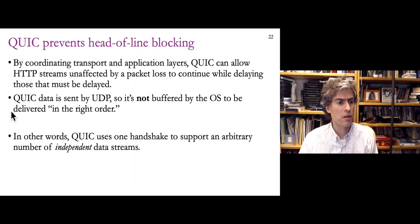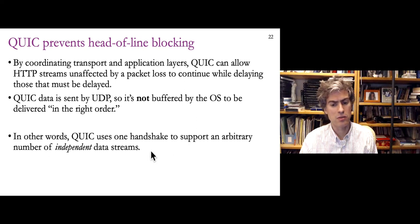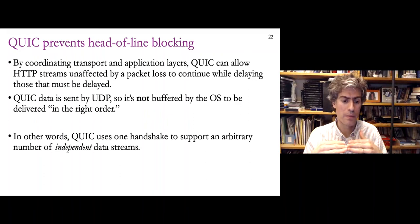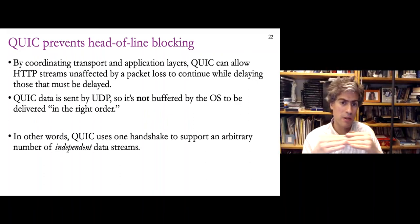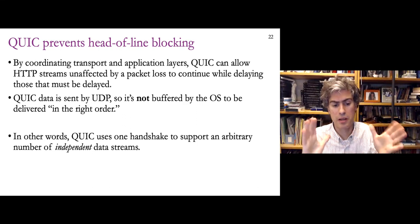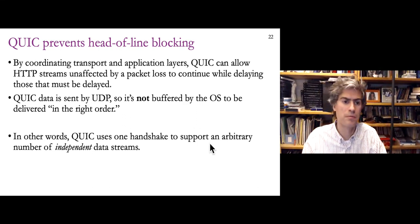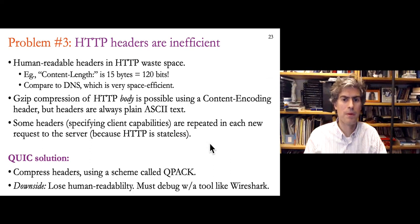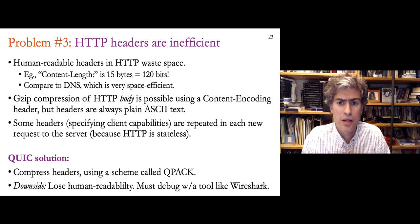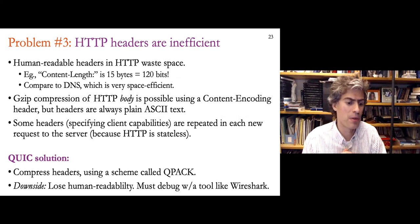QUIC uses one handshake to support an arbitrary number of independent data streams, whereas TCP uses one handshake to support one data stream and forces data to be supplied in order. The third problem with the traditional web stack is that HTTP headers are inefficient — not the most important problem, but one QUIC solves. HTTP has human-readable headers — for example, 'Content-Length:' followed by a number. That string 'content-length' is 16 bytes or 120 bits, to represent something present in virtually every single response.